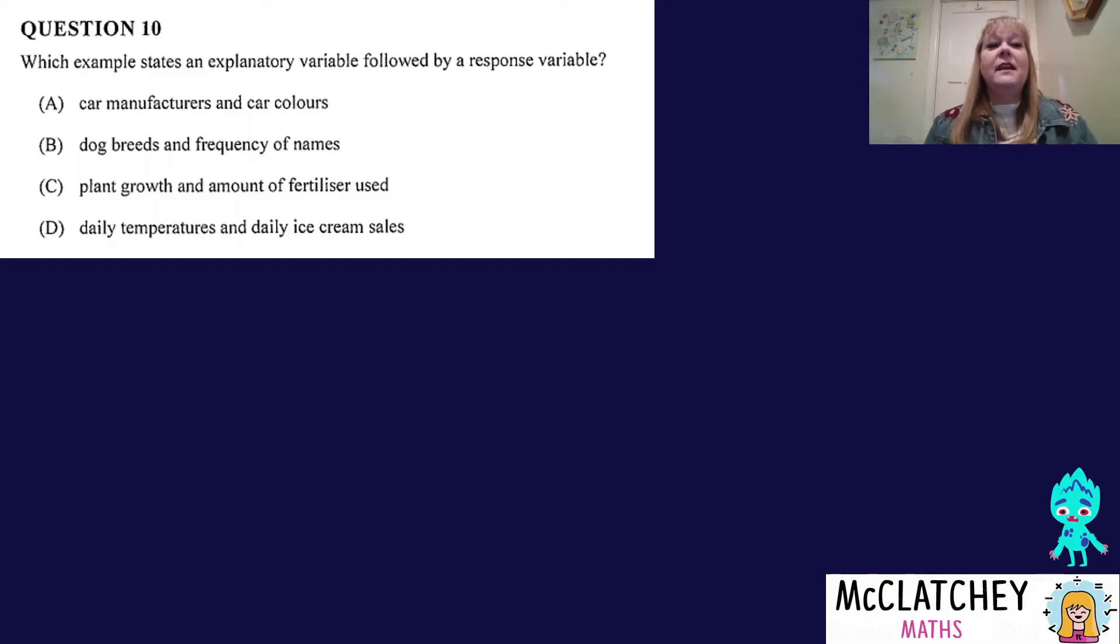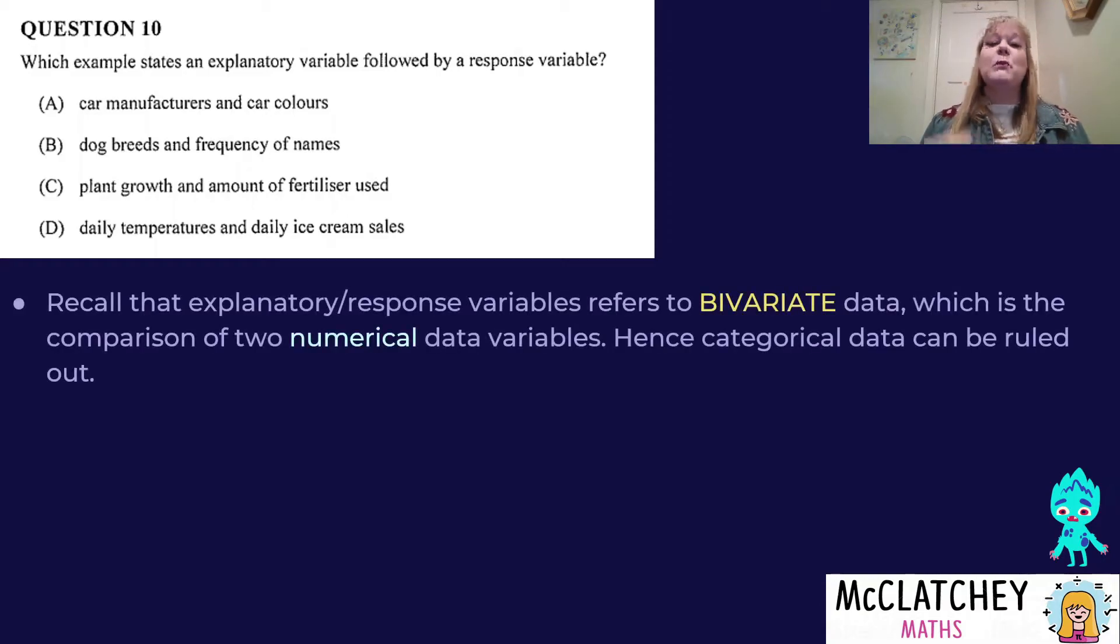Let's look at our next question, question 10. Which example states an explanatory variable followed by a response variable? First of all, you need to remember when we're talking about explanatory variables and response variables, we're talking about bivariate data. We know it draws scatter plots. We know that the explanatory goes on the x-axis, and the response goes on the y-axis. We also know that we're comparing numerical data, not categorical data.